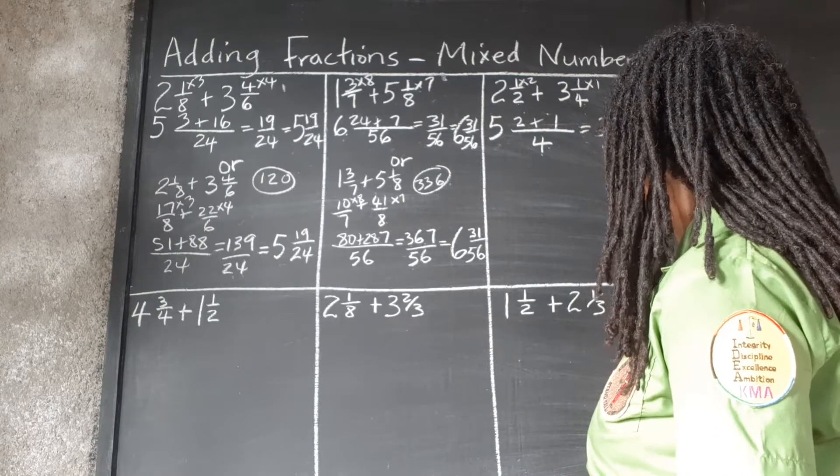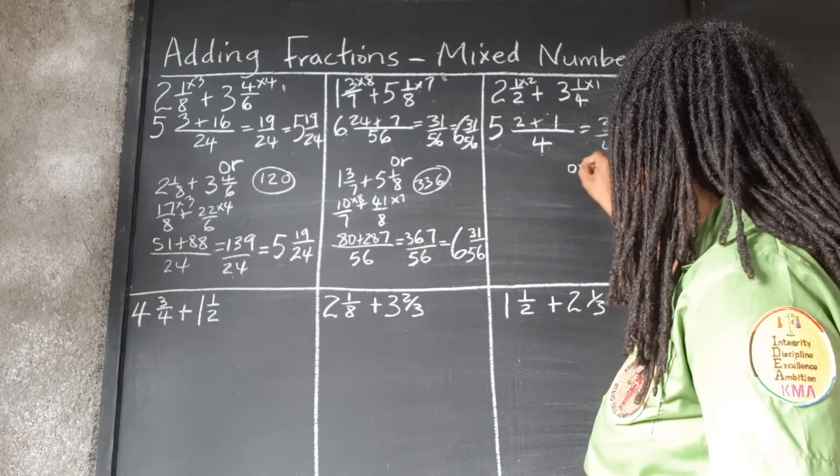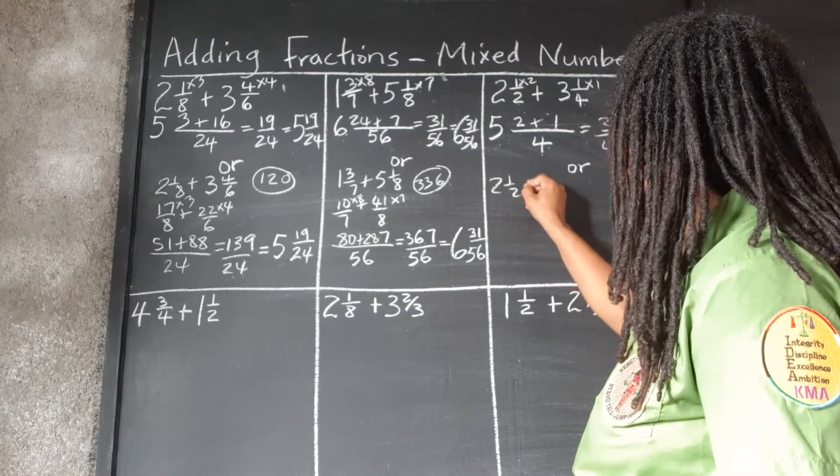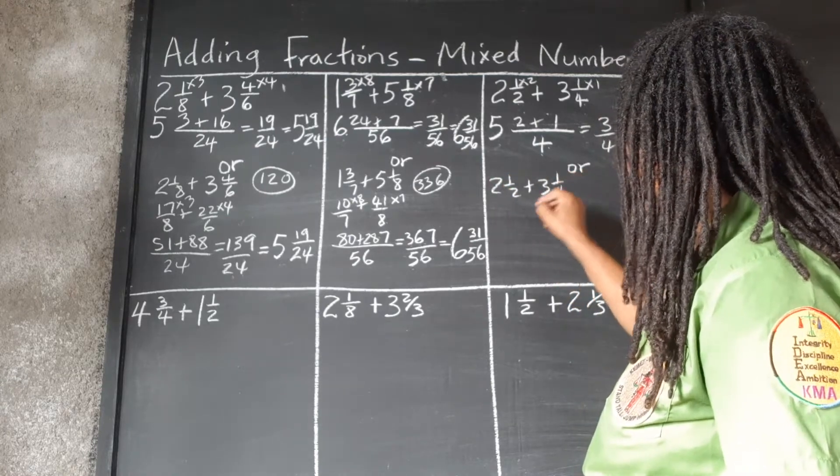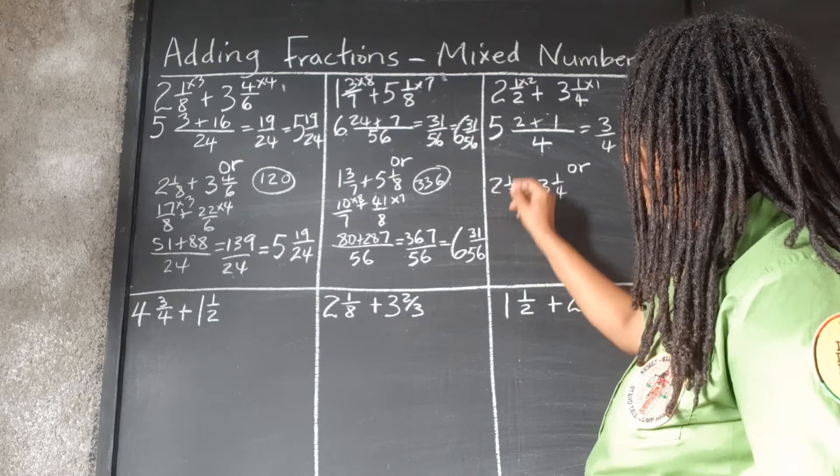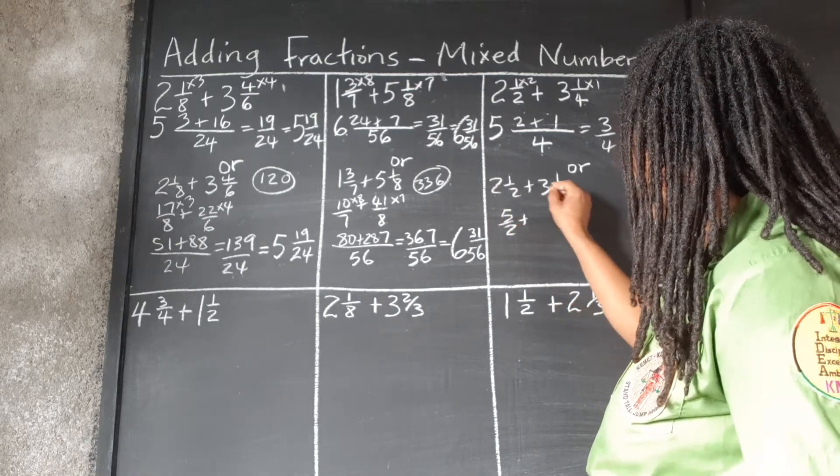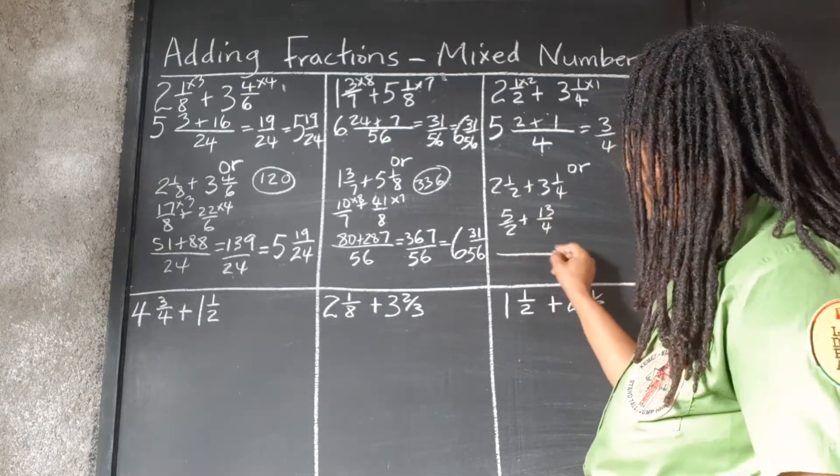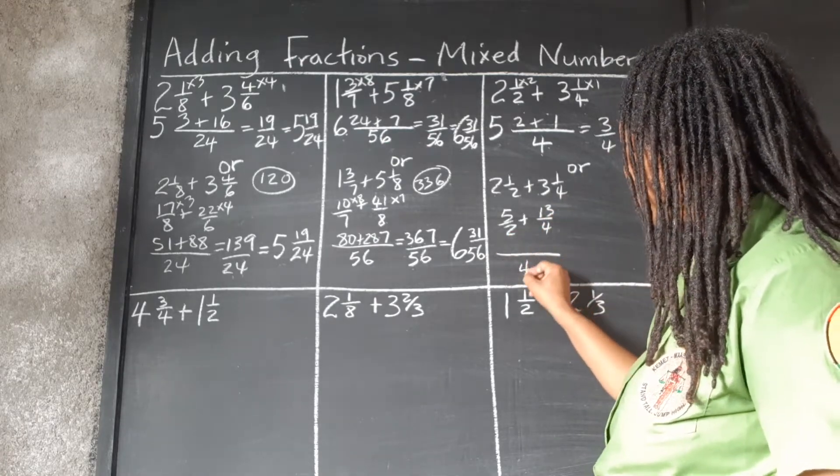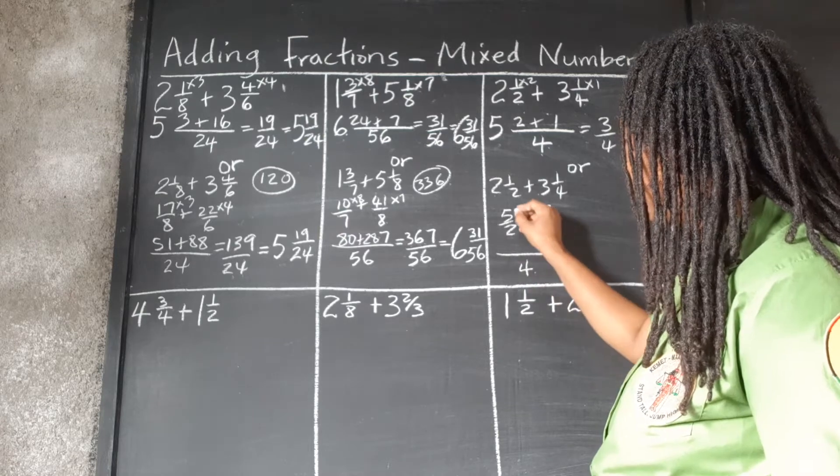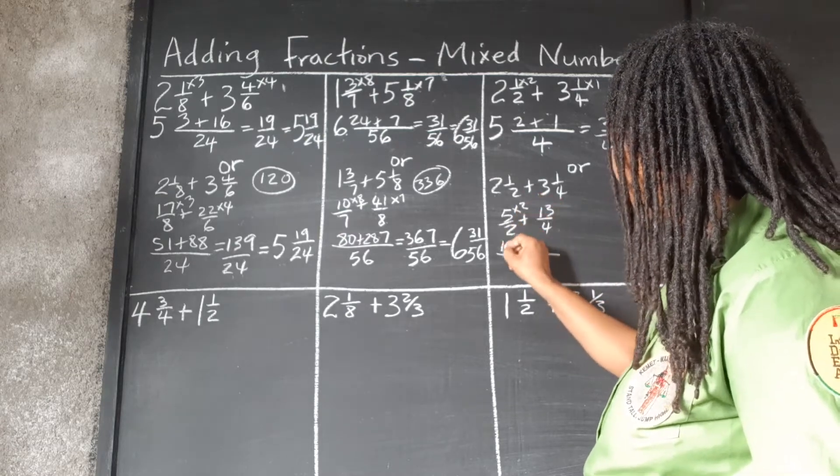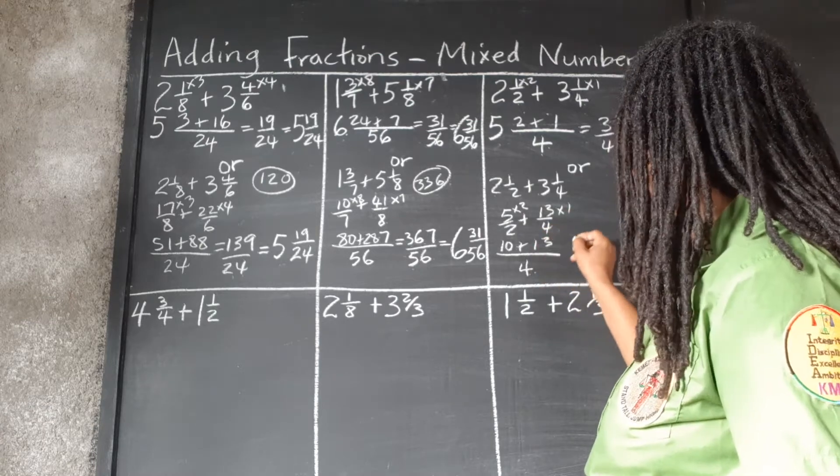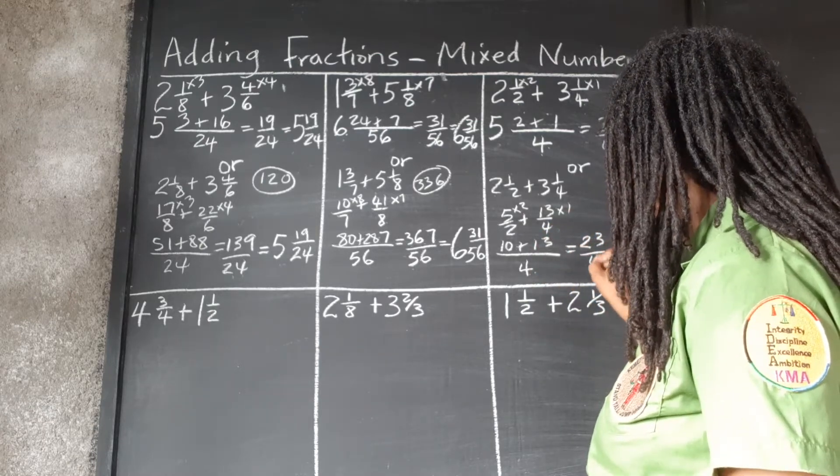Or let's work in the other method. 2½ plus 3¼. 2 times 2 is 4 and 1, 5 over 2. 3 times 4 is 12 and 1, 13 over 4. LCM of 2 and 4 is 4. 2 goes into 4 2 times. 5 times 2 is 10. 4 goes into 4 1 time. 13 times 1 is 13.